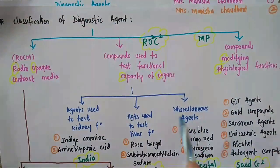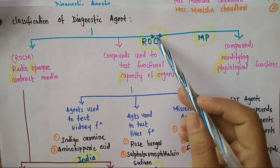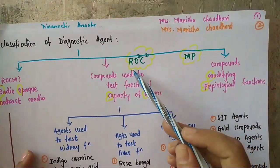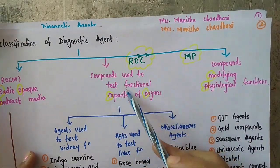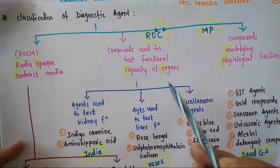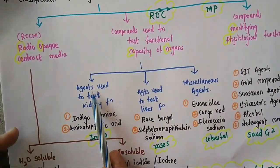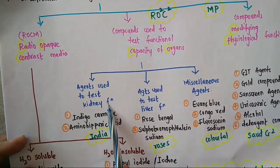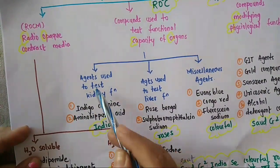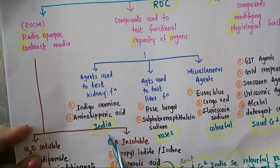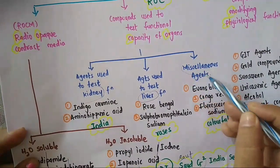Now the second class — OC — is organ capacity: compounds used to test functional capacity of organ. It is subdivided into three parts: first, agents used to test kidney function; second, liver function; and third, miscellaneous.